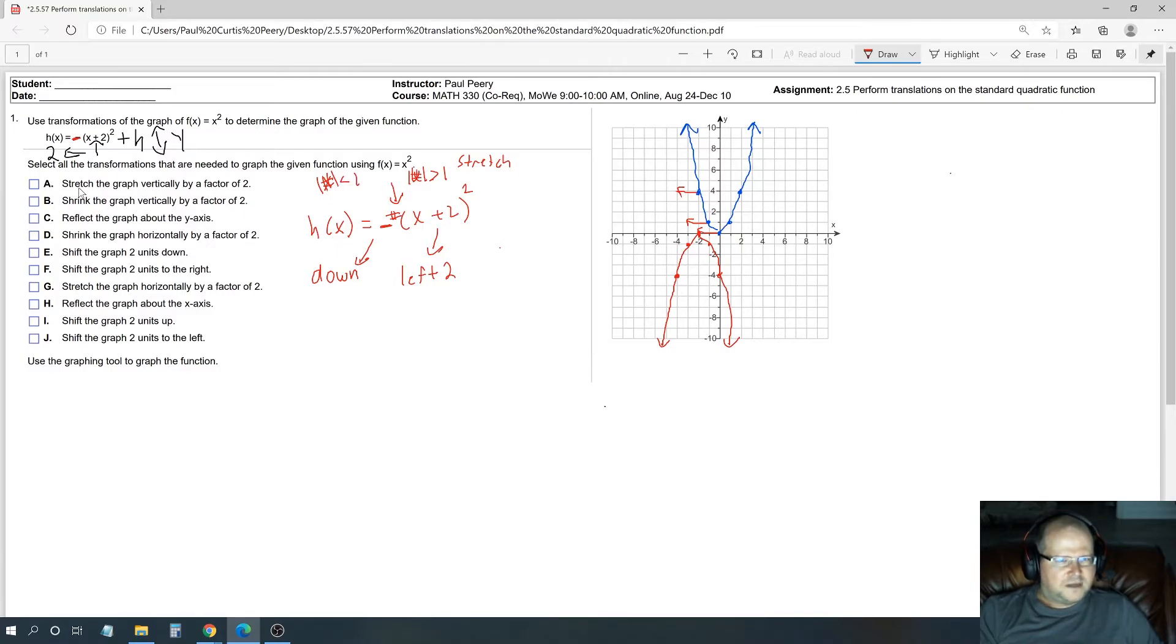Let's say that it was less than 1. Then we're going to multiply all the Y values by a number less than 1, which is going to make it compress. So for instance, if I put a half there, then the distance between all the Y values is now half. So it squished it, right? Whereas if I put a number greater than 1 there in front of the parentheses, that means I'm multiplying the distance between all the Y values by that factor.